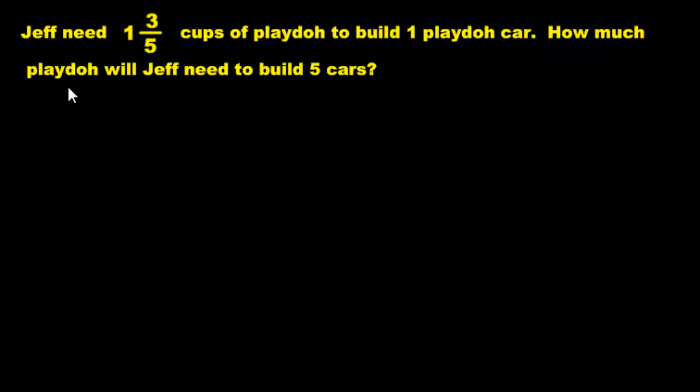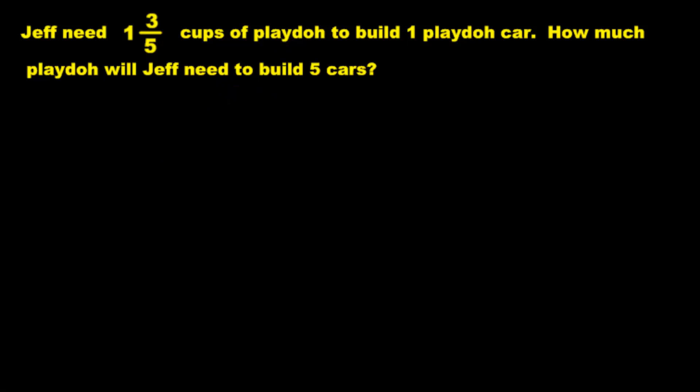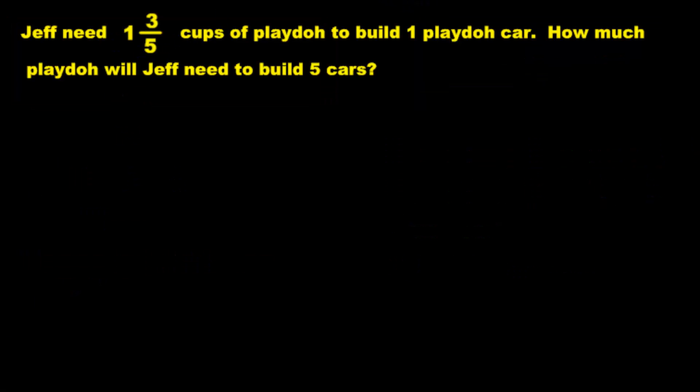Here's the first word problem. Jeff needs this many cups of Play-Doh to build—I'm not sure, is that how you spell Play-Doh? He needs that many cups of Play-Doh to build one Play-Doh car. However, how much Play-Doh will Jeff need to build five cars? Notice that it doesn't include any of the clues on this page. Yes there is. Which one? Yes, repeated addition. Very good. If you got that, you are like super awesome.